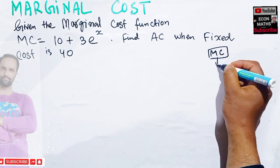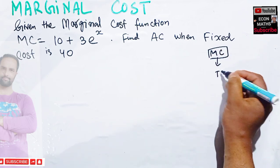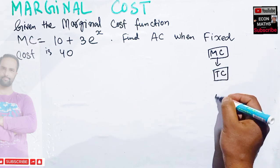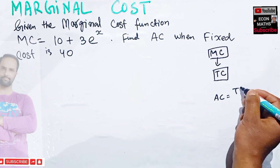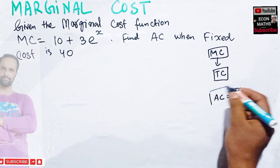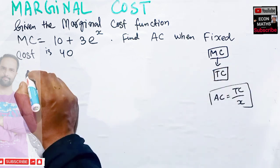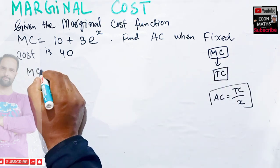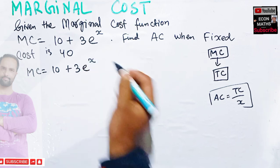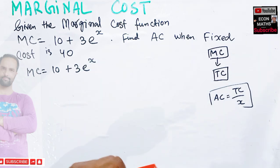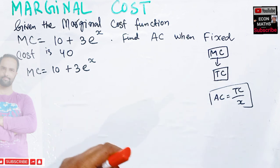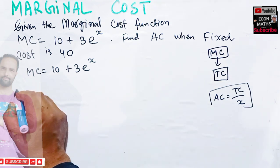First we need to find out the total cost. When we get the total cost, then the average cost is simply total cost divided by output. We have marginal cost given as 10 + 3e^x.